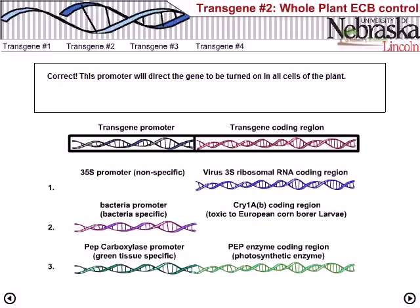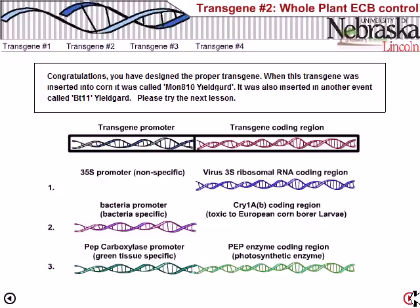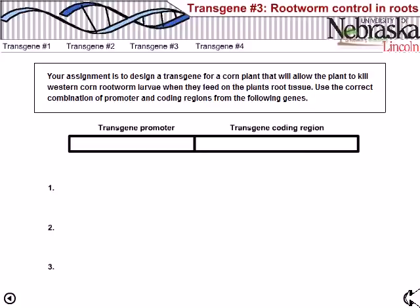When this transgene was inserted into corn, it was called MON810 YieldGard. This gene was also inserted in another event called BT11 YieldGard.